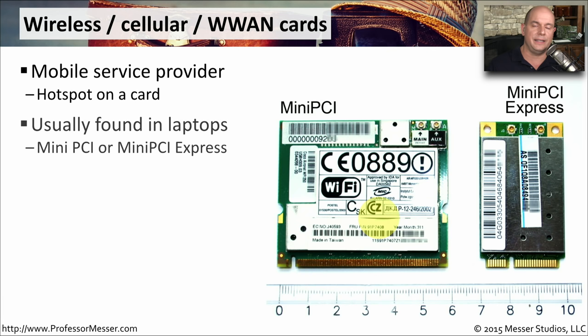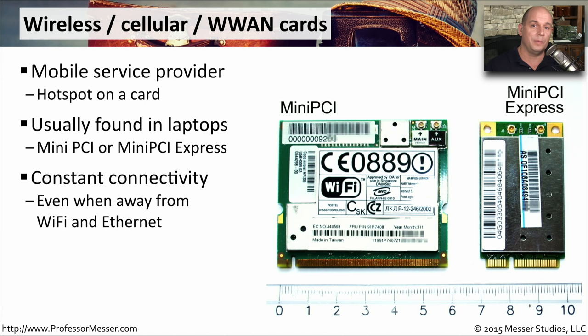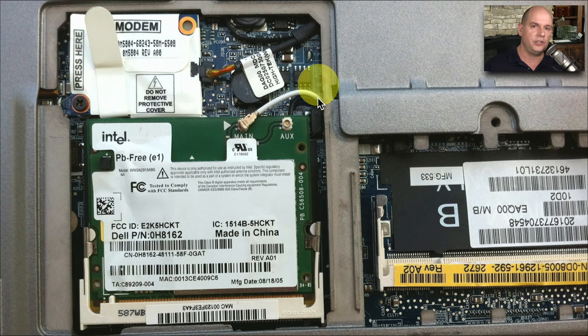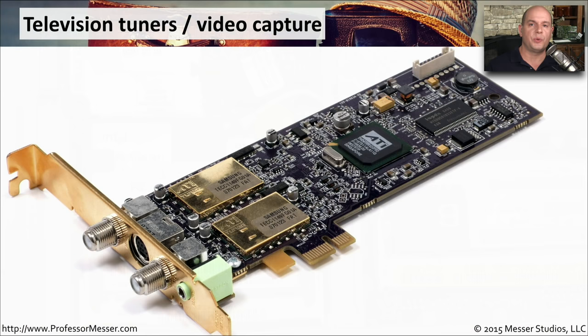You often see these in mobile devices or laptops. They're usually connecting with one of these mini-PCI or PCI Express cards that have a spot to plug in the antenna so you can connect to the wireless network. This means you could take your laptop anywhere there's a wireless signal from a provider and be able to connect to the internet. They're very easy to install — you simply connect it to the interface slot inside of your laptop, connect up the antenna connection, and you're now able to communicate over the wide area network using the wireless cellular service provider.